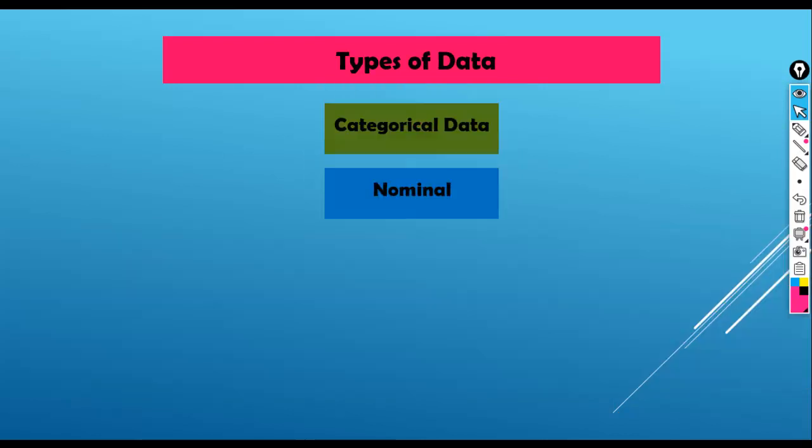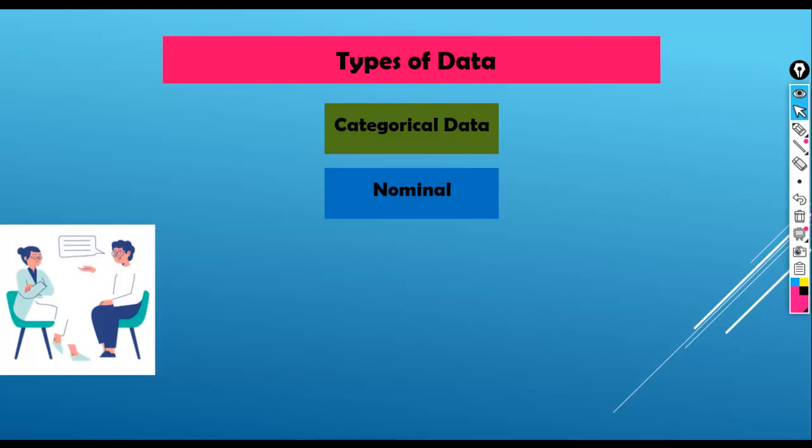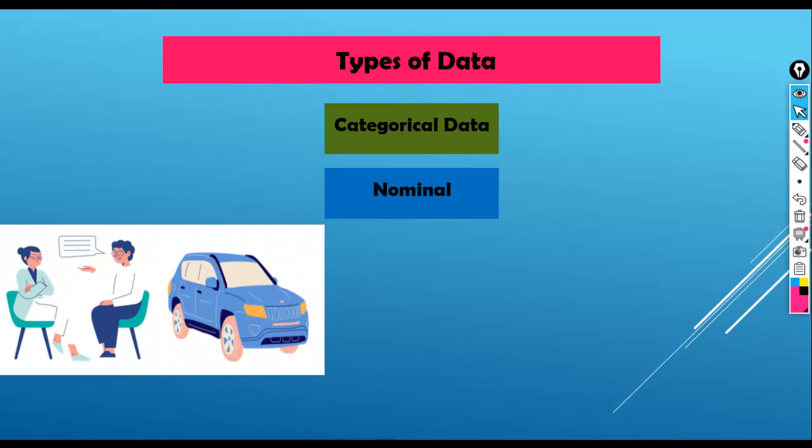Next, nominal. Nominal data is a type of categorical data that doesn't have any inherent order or ranking. Nominal data is often used to classify or label items rather than to measure or quantify them. Some examples of nominal data include a person's gender: male or female. The type of car a person drives: sedan, SUV, etc.